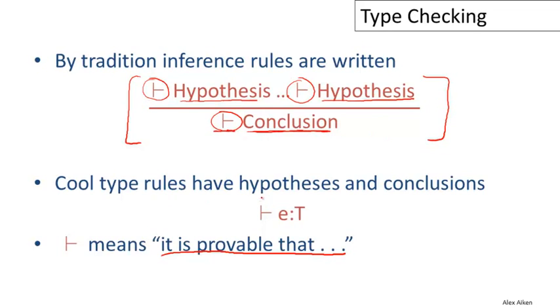Cool type rules will have hypotheses and conclusions where we prove within the system that some expression has a particular type.